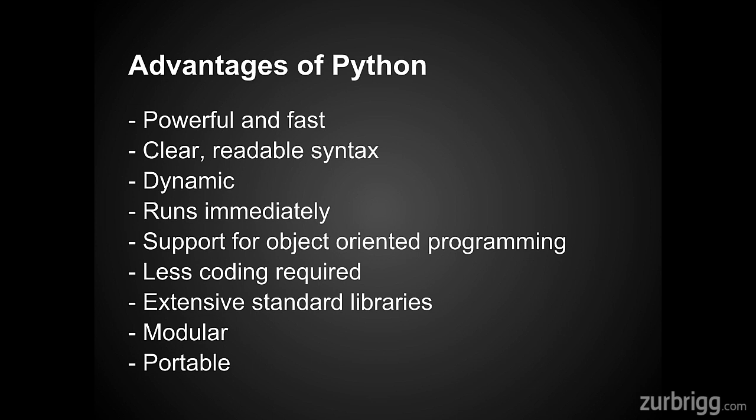If you define something as an integer, it will always be an integer. Because Python is an interpreted language, the code runs immediately. This goes back to fast — it allows for quick iterations and tests. This means you can modify your code and quickly run it without having to compile and link it.